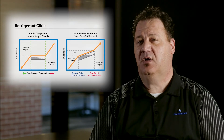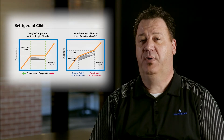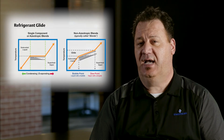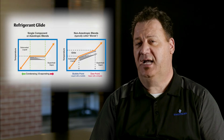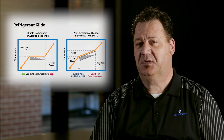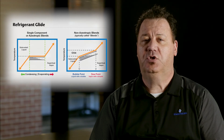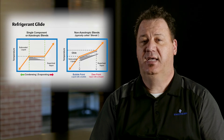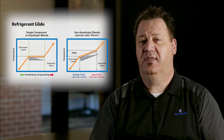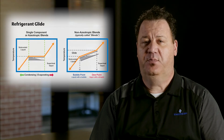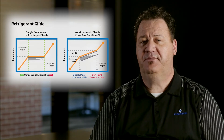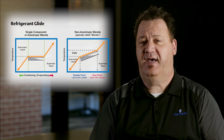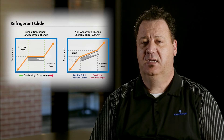We start out with our bubble point, which is our liquid side entering our saturation temperature, and we end with our dew point, which is our saturation entering that vapor point. The difference in those two is in fact our Glide.